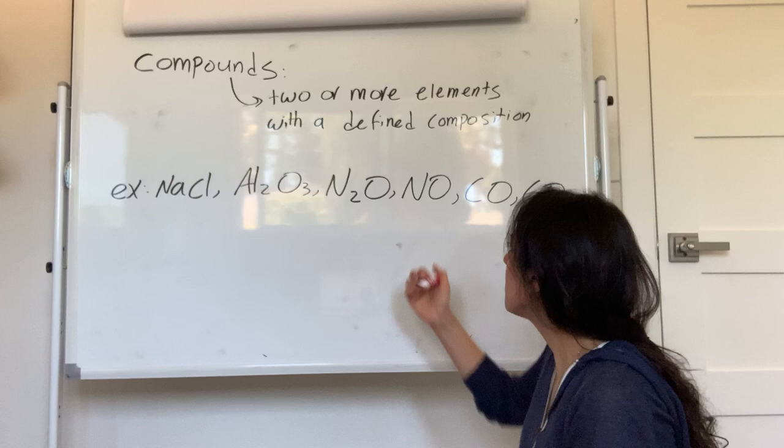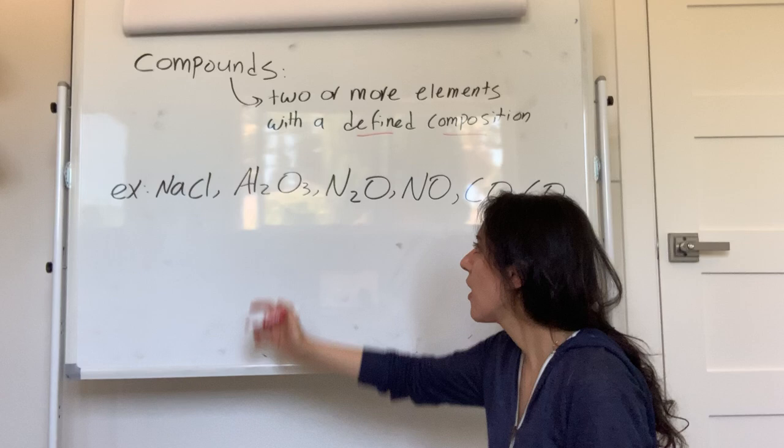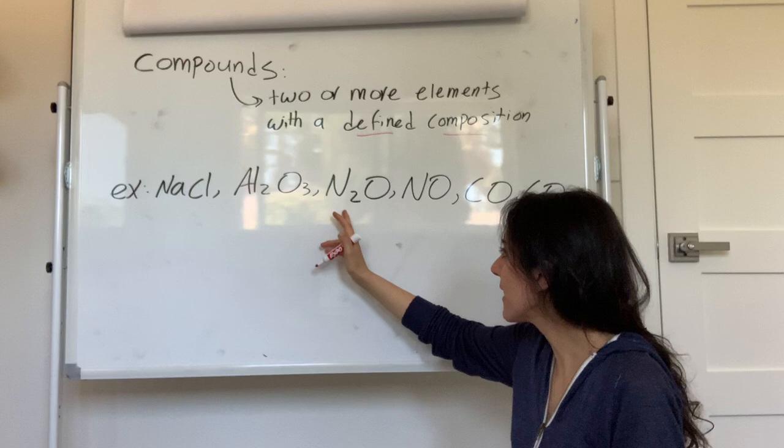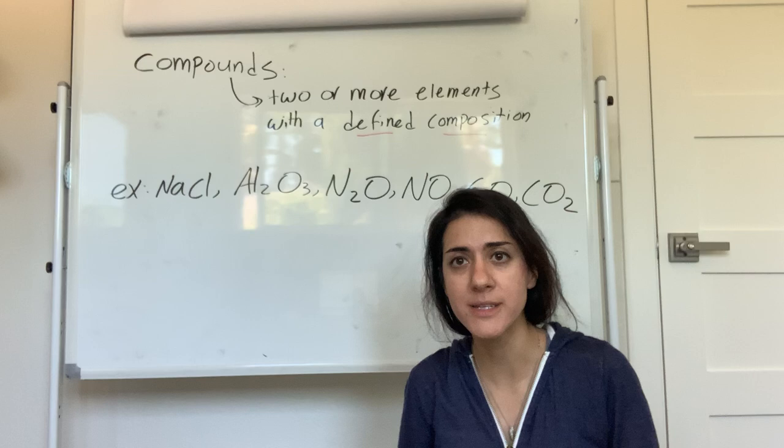What really matters is the defined composition part. Let's go over some examples. NaCl — is that a compound? Yes, that's actually table salt. Aluminum oxide — that's a compound. Dinitrogen oxide — that's a compound. Nitrogen monoxide — that's a compound. Carbon monoxide, carbon dioxide — these are all examples of compounds: two or more elements with a defined composition.